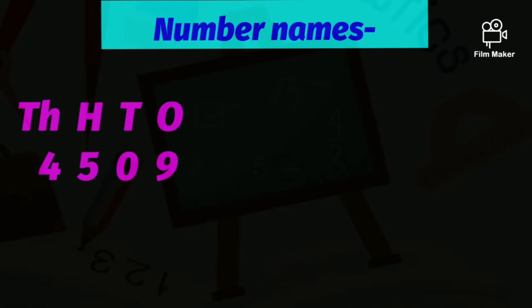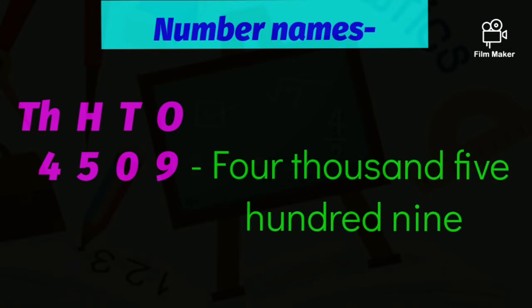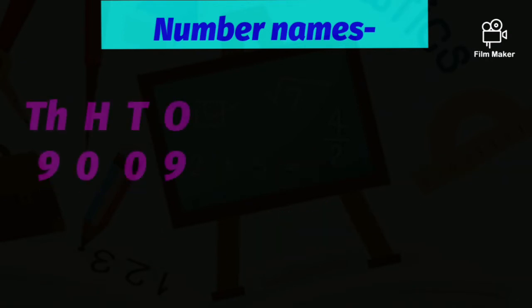In the next number we have four thousands, five hundreds, zero tens, and nine ones. So the number name is four thousand five hundred nine. We will say the thousands place first, then hundreds, and then read the tens and ones together.